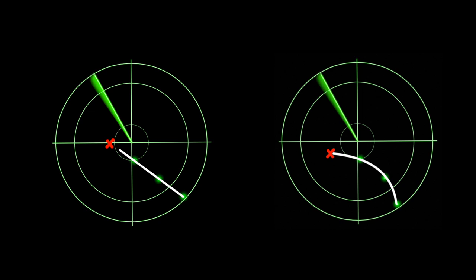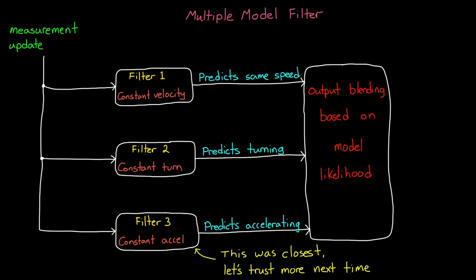And this behaves just like how a human would do prediction. If the airplane seems to be flying straight, assume it'll keep flying straight. And if you see that it's starting to turn, assume that turn will continue for some time. With this method, there will be some transient error whenever the object transitions to a new motion, but the filter will quickly realize that a new model has a better prediction and will start to increase its likelihood. This is the general idea behind multiple model algorithms.